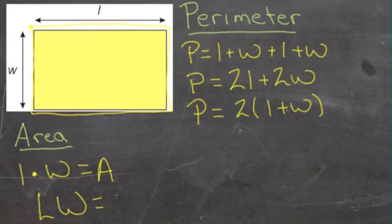In algebra, that's recognized as multiplication. LW means length times width, and that's equal to the area.